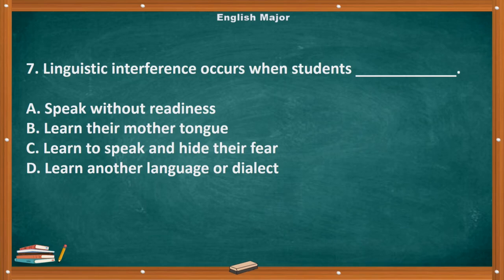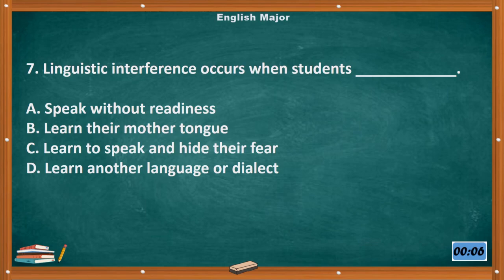Question number 7. Linguistic interference occurs when students blank. A. Speak without readiness. B. Learn their mother tongue. C. Learn to speak and hide their fear. D. Learn another language or dialect. The correct answer is letter D, Learn another language or dialect.